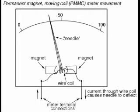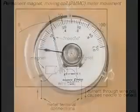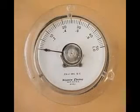The arc on the meter display is labeled with numbers to indicate the value of the quantity being measured, whatever that quantity is. In other words, if it takes 100 µA of current to drive the needle fully to the right, making this a 100 µA full scale movement, the scale would have 0 µA written at the very left and 100 µA at the very right, 50 µA being marked in the middle of the scale.